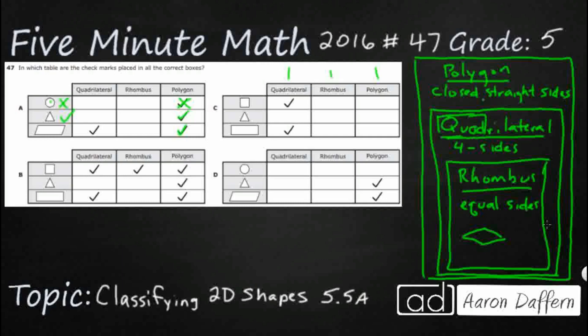B, square. First, is it a polygon? Yes, closed and straight sides. Is it a four-sided shape, quadrilateral? Yes. Does it have equal sides? Yes, it does. Did you know that a square is a special type of rhombus? It's a special type of rhombus that actually has four right angles. So that square is good to go.